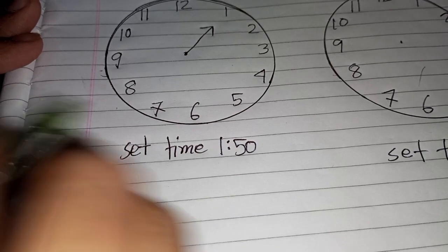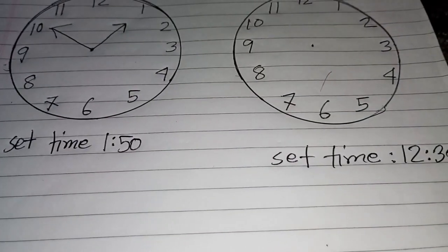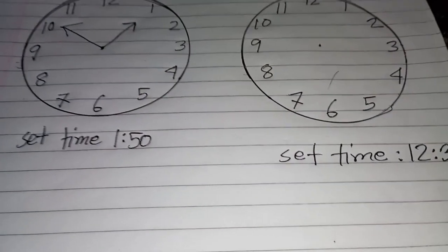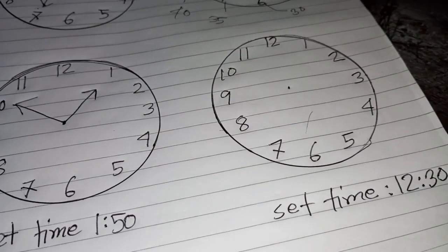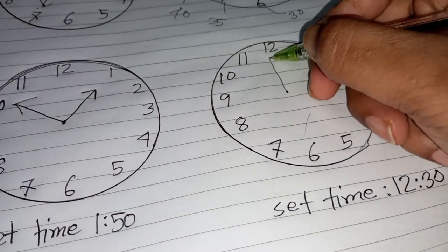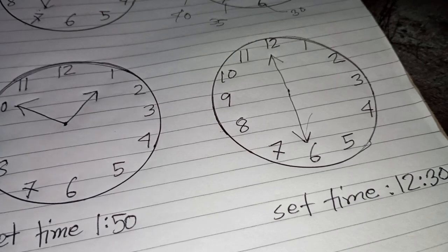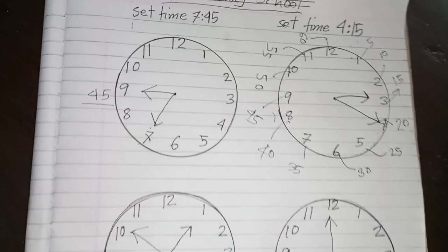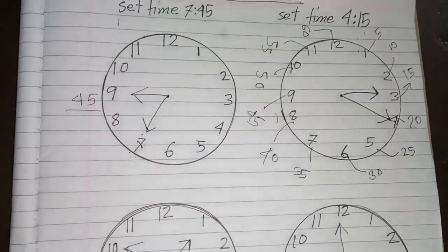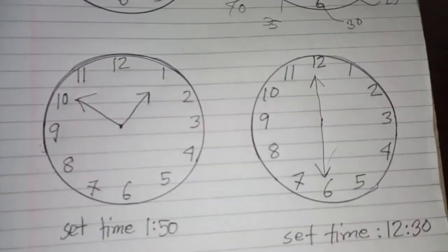Set time 1:50. We set time 1:50. We will give you two numbers. We give you 50, we give you 12 and 30, we give you 12 and we give 6, we give you 30.